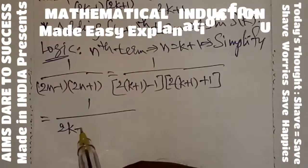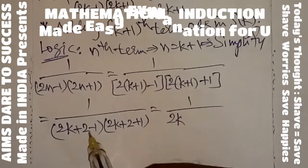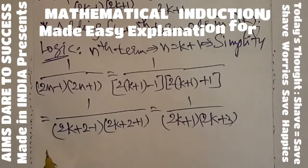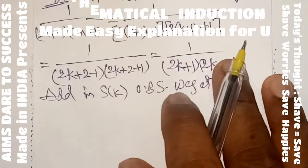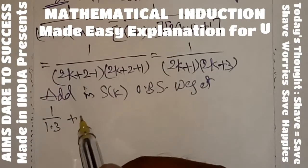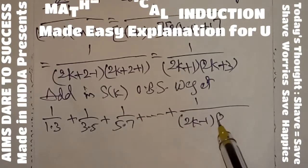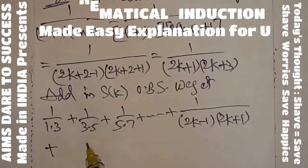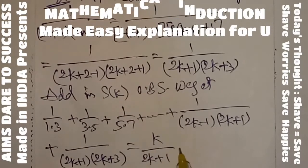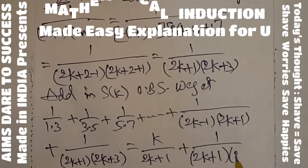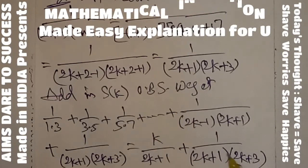After simplification: 2 multiplied inside gives (2k+2−1)(2k+2+1) = (2k+1)(2k+3). So the (k+1)th term is 1/((2k+1)(2k+3)). Add this value to S(k) on both sides. LHS: 1/(1×3) + 1/(3×5) + ... + 1/((2k−1)(2k+1)) + 1/((2k+1)(2k+3)). RHS becomes k/(2k+1) + 1/((2k+1)(2k+3)). Leave the LHS and simplify the RHS value.